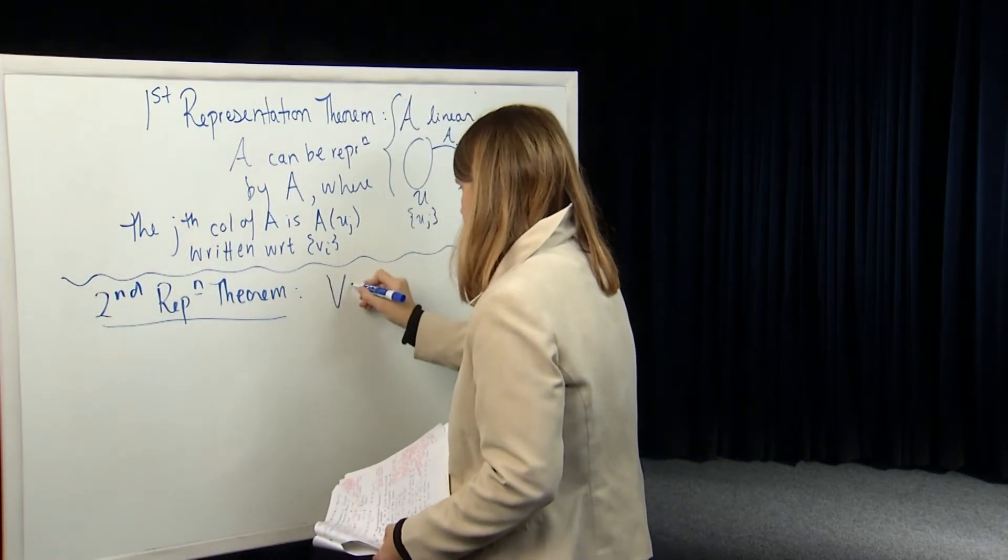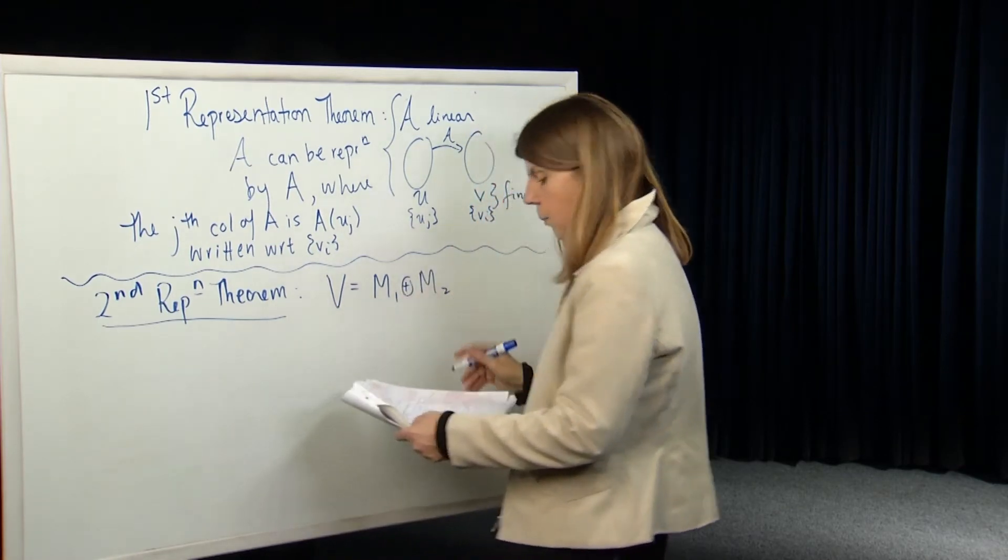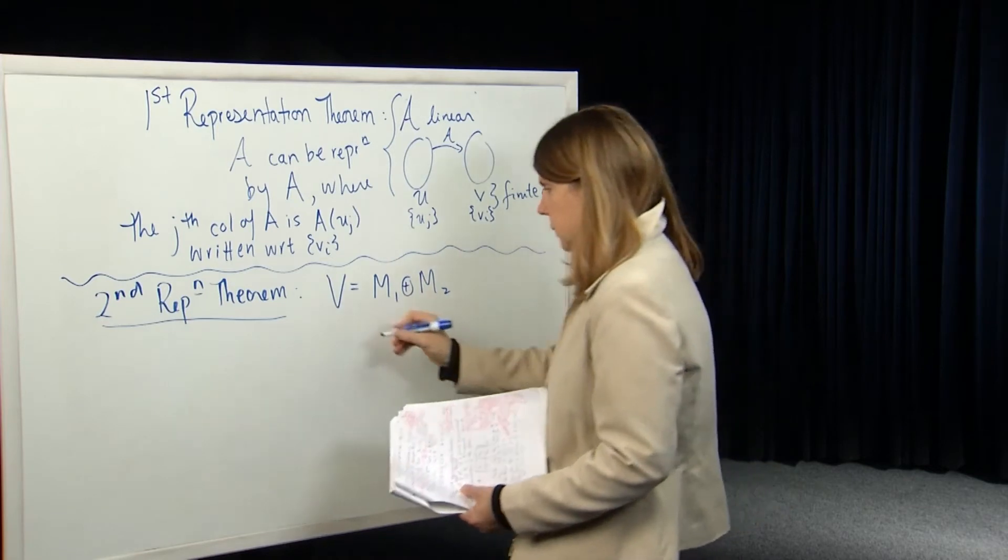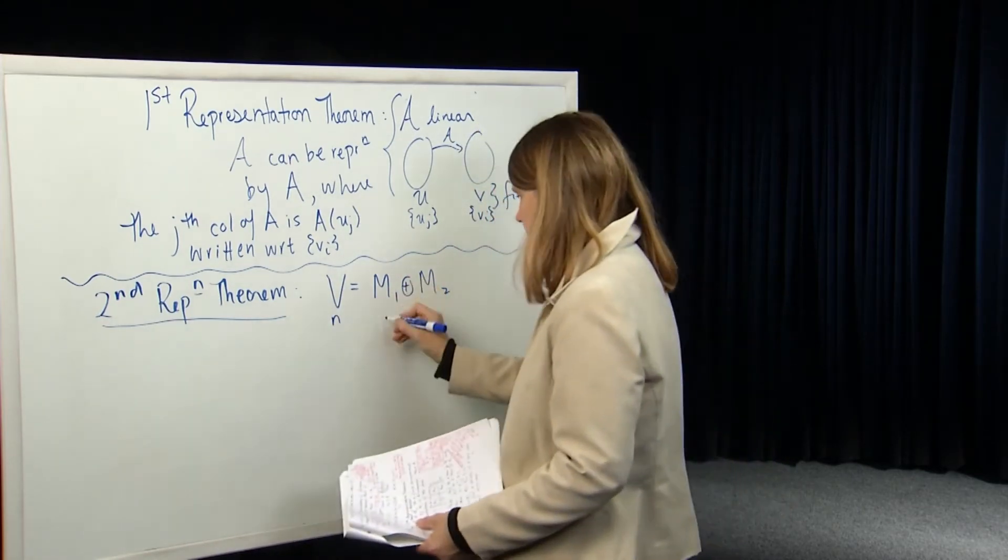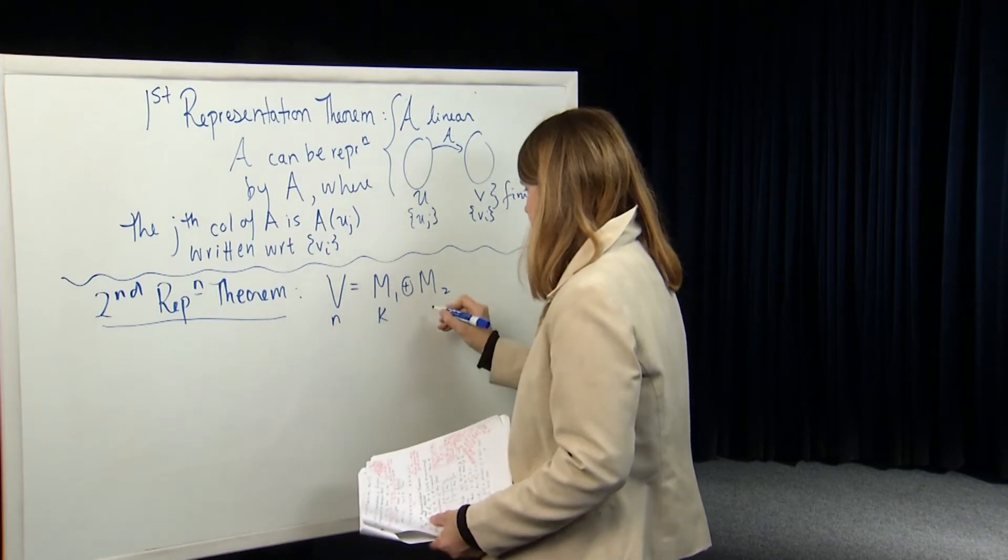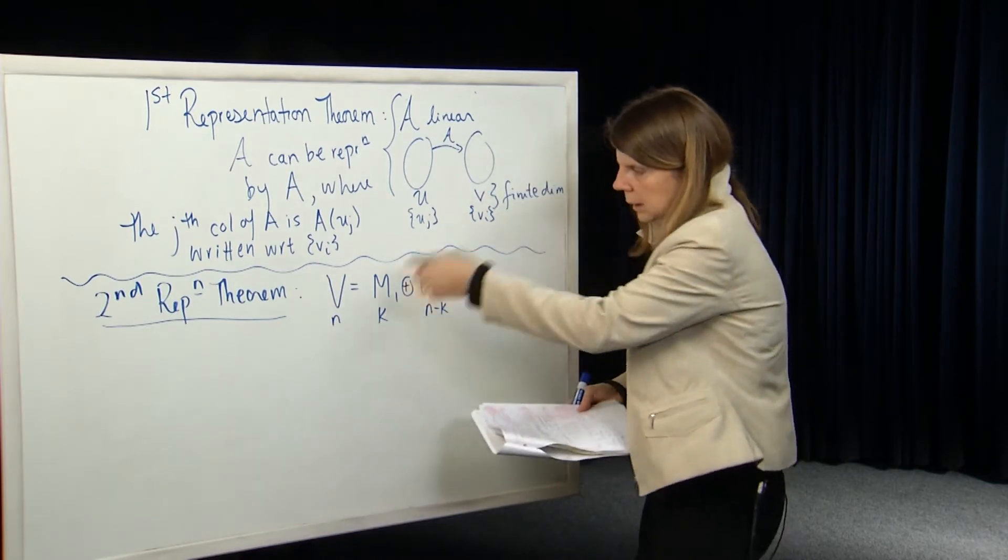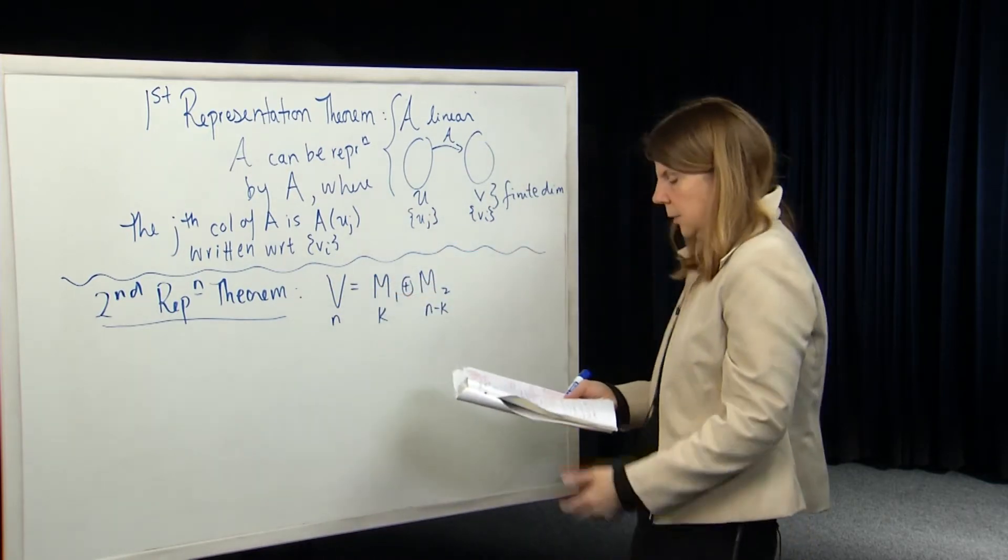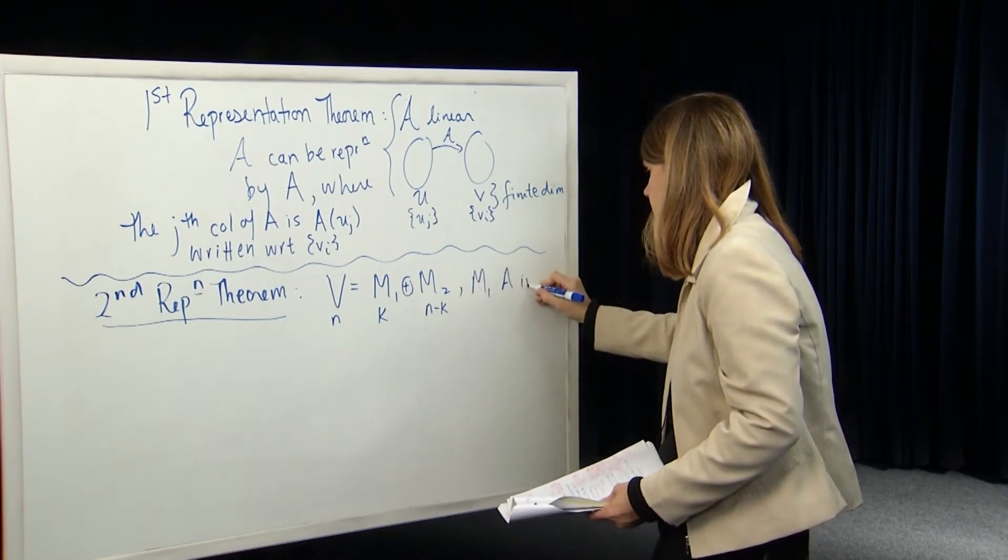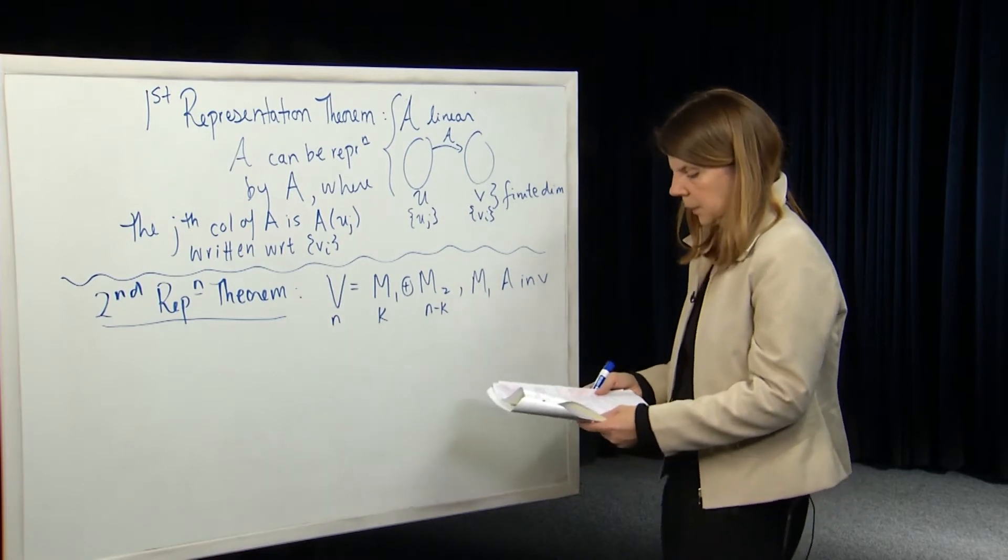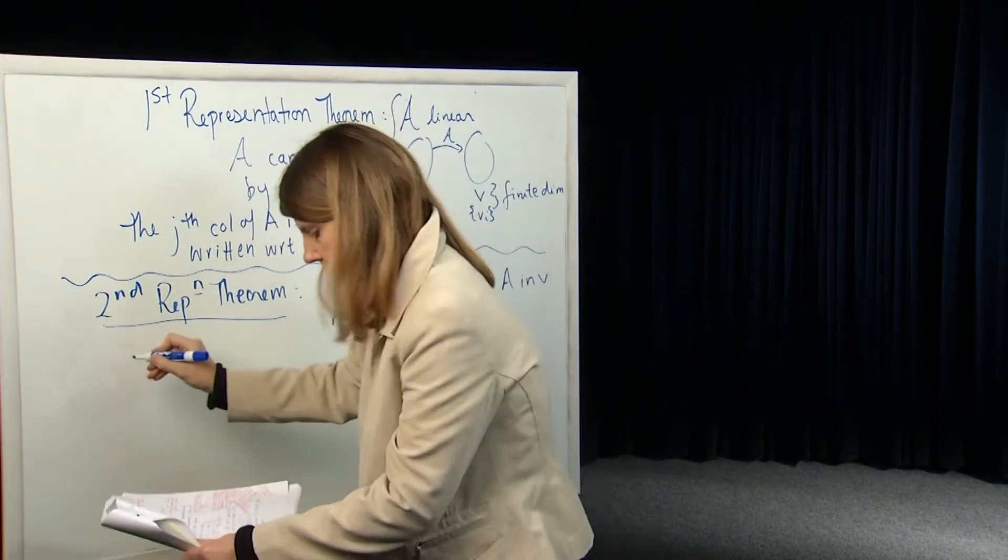It says the following. Suppose you had a vector space V, which was the direct sum of two subspaces M1 and M2. So let's suppose that V has dimension N, and let's suppose that M1 has dimension K, and then M2 has dimension N minus K. So this is a finite dimensional vector space. If M1 is A invariant, so let's suppose M1 is A invariant.